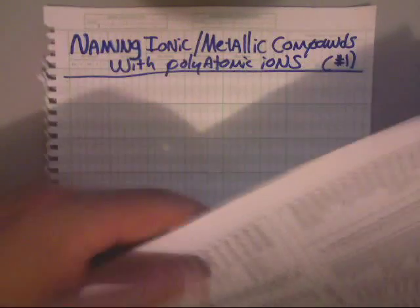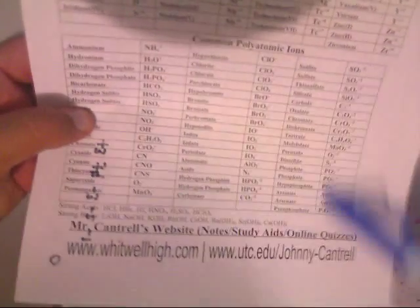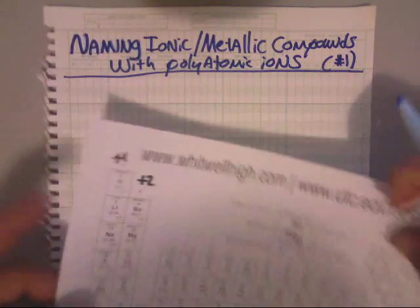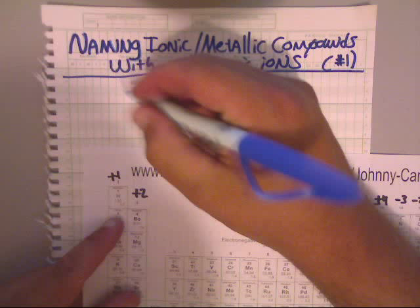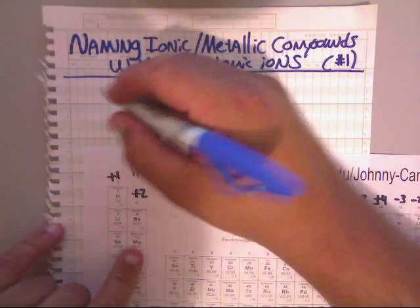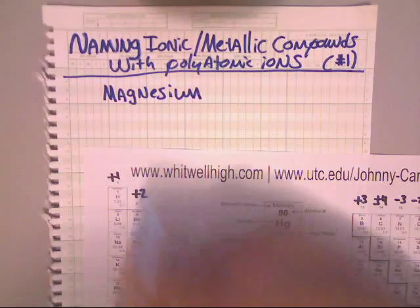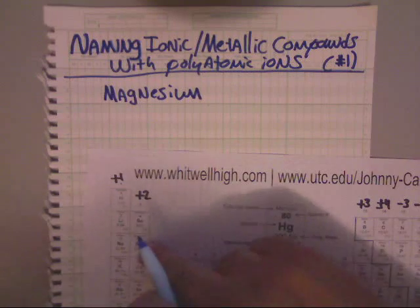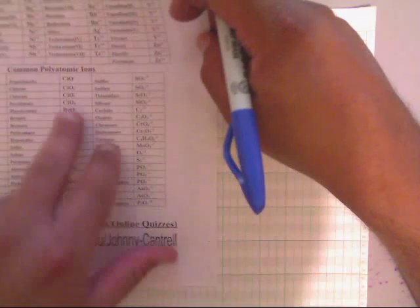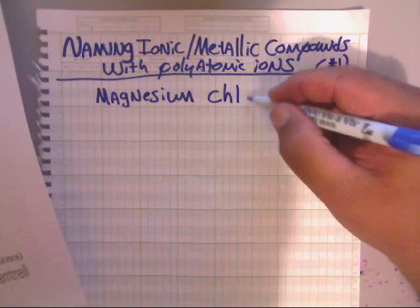The polyatomic ions are at the bottom of the white sheet on the back — they're all down here. Basically, let's say that you're given a name such as magnesium, picked from the first two columns, and the other name they give you is chlorate. I'm picking chlorate from right here — chlorate is C-H-L-O-R-A-T-E.